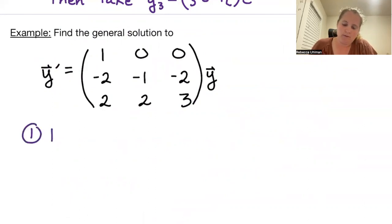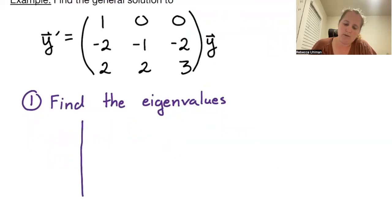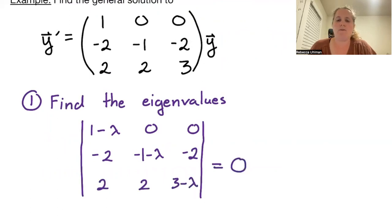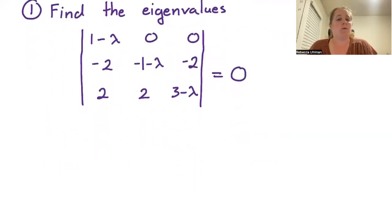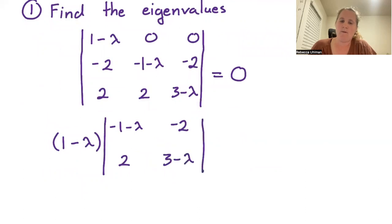The first thing we need to do is find the eigenvalues. We take the determinant of the matrix with entries 1 minus lambda, 0, 0 in the first row; negative 2, negative 1 minus lambda, negative 2 in the second row; and 2, 2, 3 minus lambda in the last row, setting this determinant equal to 0. That first row has only one non-zero term, so we expand along it to get 1 minus lambda times the 2x2 determinant of negative 1 minus lambda, negative 2; 2, 3 minus lambda, equal to 0.